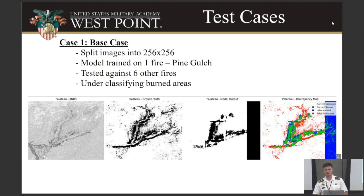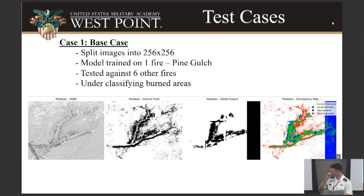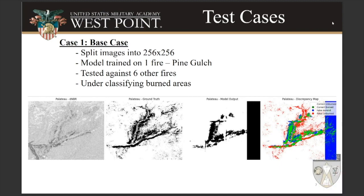The first case is the base case — the benchmark used to compare all other cases. We split images into 256 by 256 tiles to input into the convolutional network, since fire images can span thousands of pixels. This first one is trained on one fire, resulting in about 1,600 tiles, then tested and evaluated on six metrics. You can see the Plateau fire here — the original SAR imagery on the left with the ground truth, the model output, and a discrepancy map where green is correctly burned, red is unburned, and blue was predicted burned but actually wasn't. The model has the general shape of the fire but overall under-predicts, especially on the tail ends.